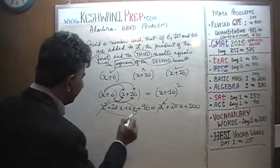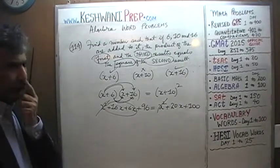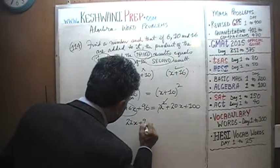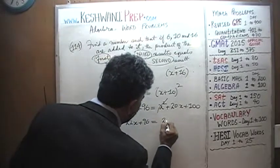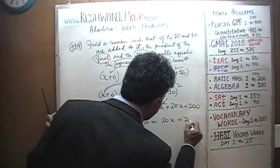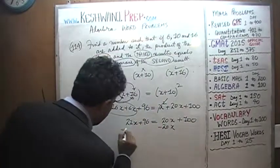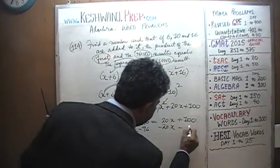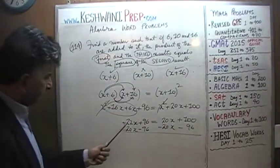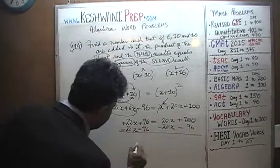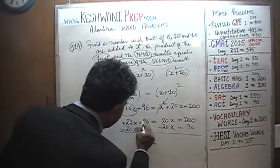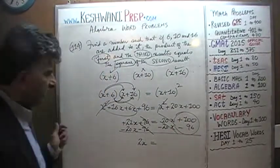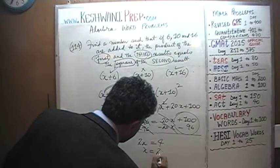After subtracting x squared from both sides, we get 16 plus 6 is 22, so 22x plus 96 equals 20x plus 100. Subtracting 20x and 96 from both sides: 22x minus 20x is 2x, and 100 minus 96 is 4, so x equals 2.